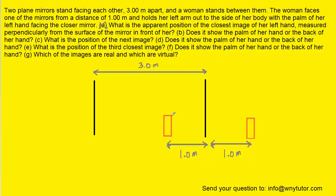Now to part B — the question noted that her left hand was showing its palm facing the mirror. So if we color in the rectangle in this fashion to represent the palm, that means in the reflection her palm would appear on this side. When the question asks does it show the palm of her hand or the back of her hand, it would indeed be the palm. So that is the correct answer to part B.